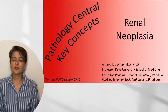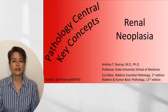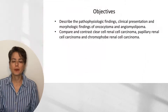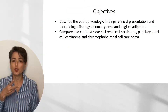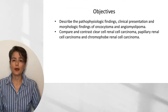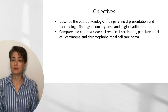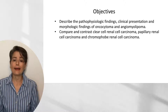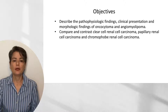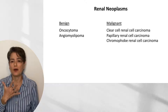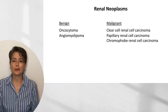Welcome to Pathology Central, Key Concepts. The topic of this video is renal neoplasia. We're going to focus on two relatively rare benign tumors, oncocytoma and angiomyolipoma, and then spend the rest of the video focusing on the variants of renal cell carcinoma: clear cell, papillary, and chromophobe. Here is a synopsis of the five lesions we'll be looking at.